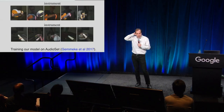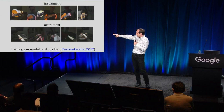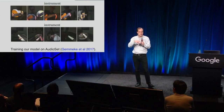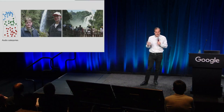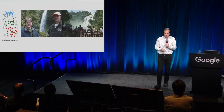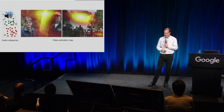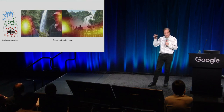Then we trained the same system on a database of instruments. Units become sensitive to particular instruments: one unit detects only guitars, another only pianos. The fun thing is that it's detecting this on the image — it doesn't even use the audio once trained. The system has learned to detect these objects by their visual appearance. You can also locate which regions of a picture are responsible for different types of sounds — if you ask which part of this picture is responsible for hearing water, these regions will produce that type of sound. It has learned to collocate sounds with regions of the picture.